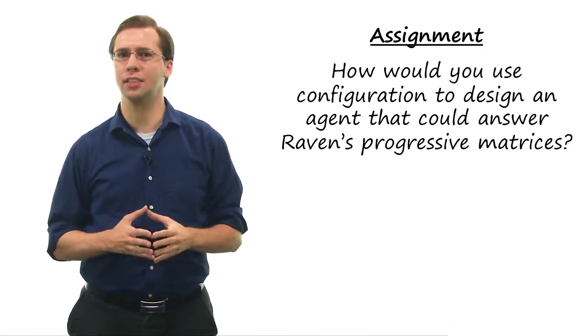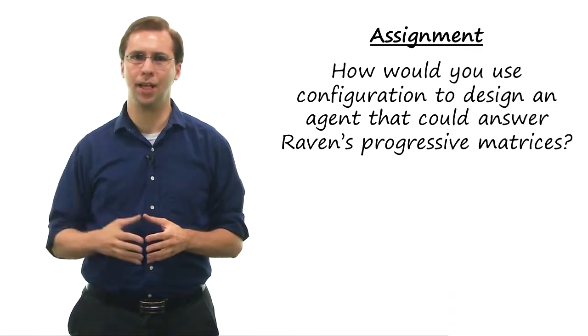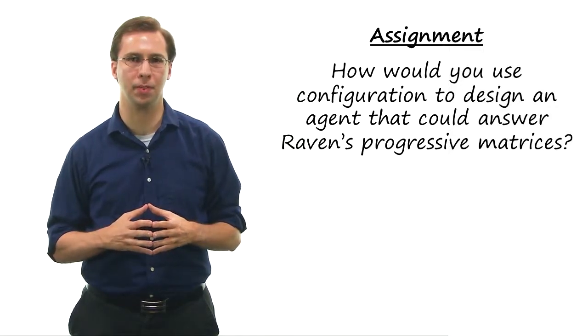So how might you use the idea of configuration to design an agent that can answer Raven's progressive matrices? We've talked in the past about how constraint propagation can help with solving these problems.